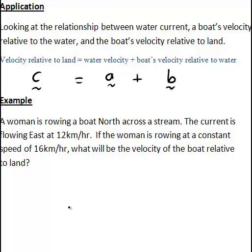For example, a woman is rowing a boat north across a stream and the current is flowing east at 12 kilometres per hour. Right away we can see that there is a vector pointing due north. Because that is where the person is rowing the boat, that relates to the velocity of the boat relative to water.